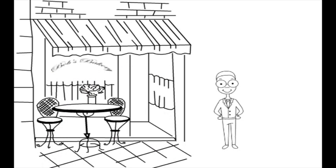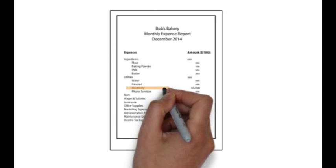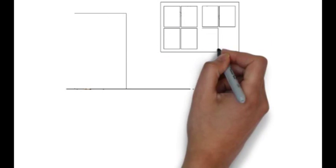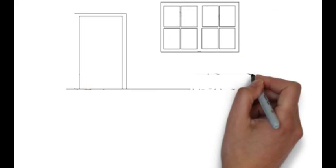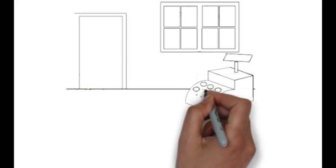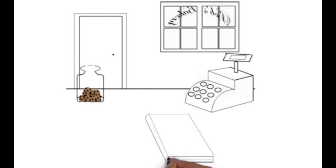Bob has started to examine the major costs in his newly acquired business. One cost that has increased significantly is electricity, and Bob wants to understand how to better manage this cost. To do so, Bob decides to use cost estimation procedures that he recently learnt in CMS. Cost estimation is the process of determining how a particular cost behaves, and this will allow Bob to better predict and manage electricity costs.